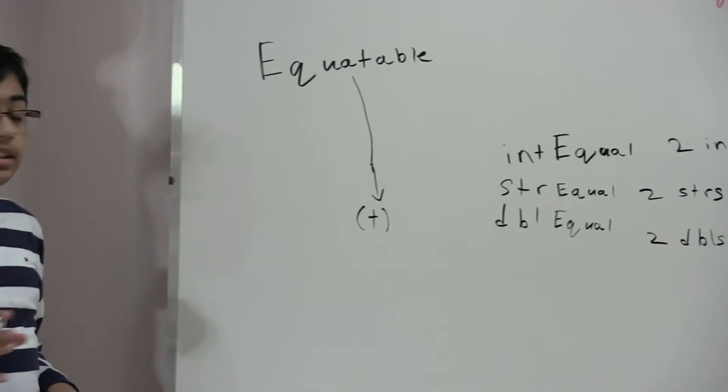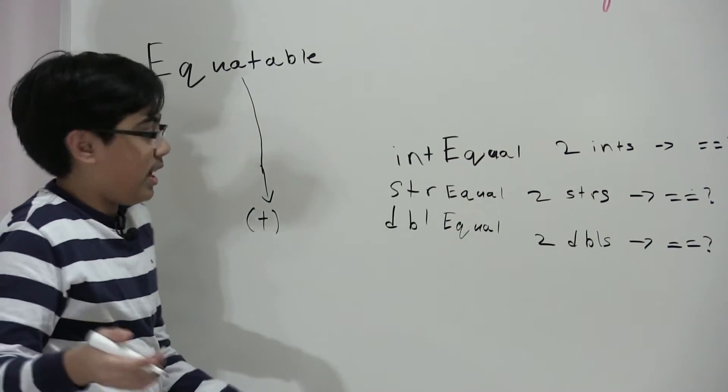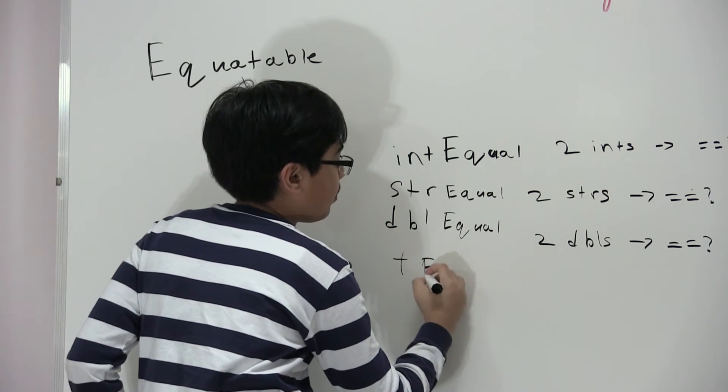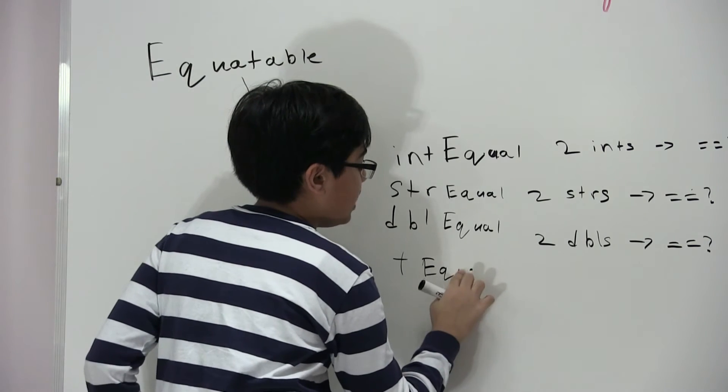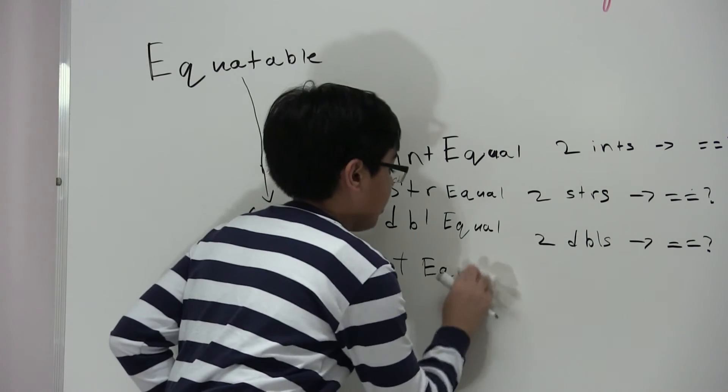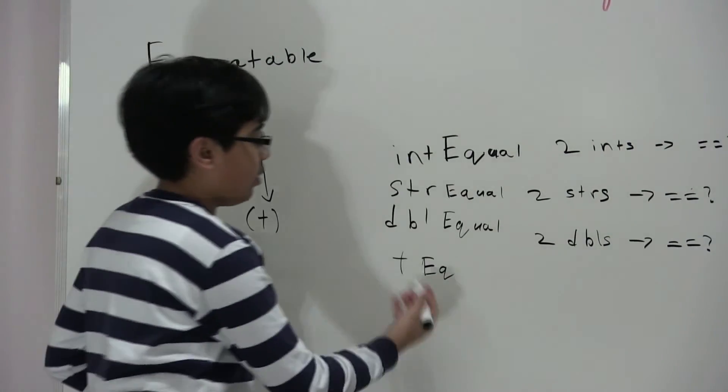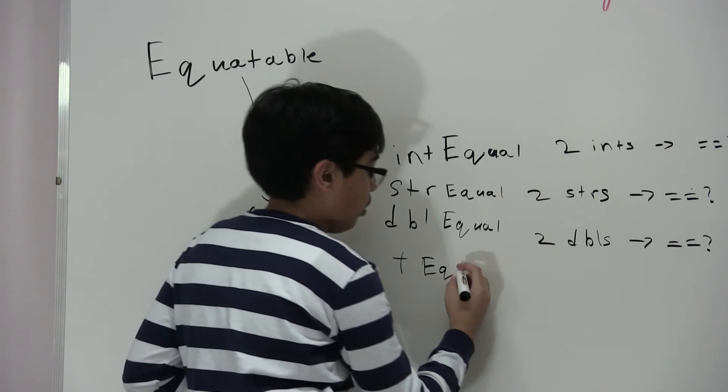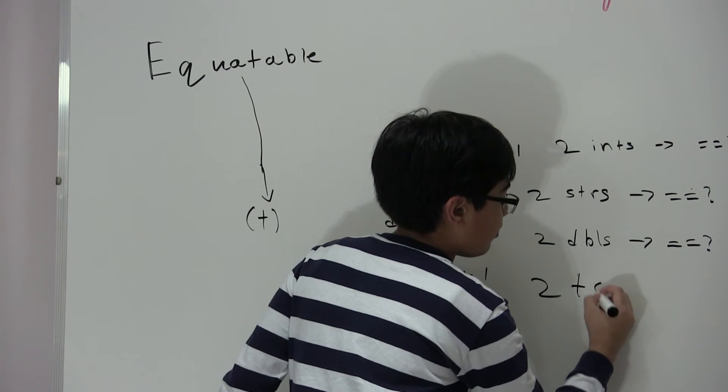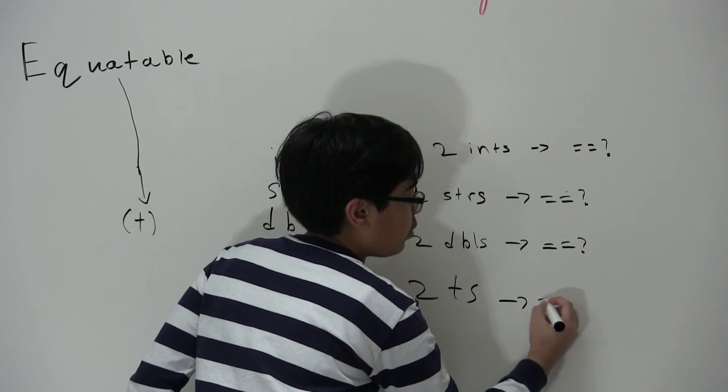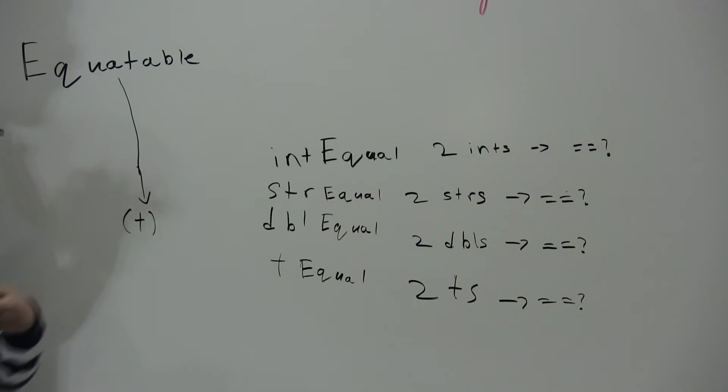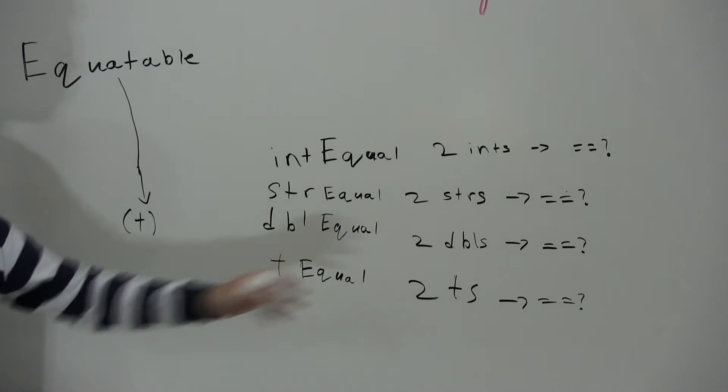Okay and then we're going to do something I think you can understand already. T equal - we could just do equal but just for this example so you understand, we're going to continue the pattern, say T equal. And it's going to take two T's and it's going to return whether or not these two T's are equal.